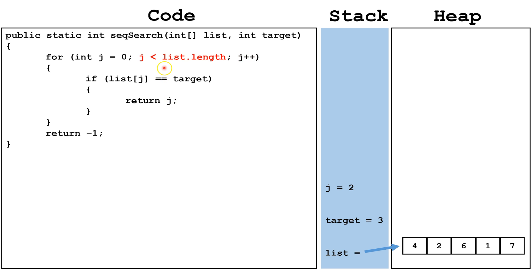Back up at the top of the for loop, we're checking: is j less than list length? 2 is less than 5, so the for loop will continue. Next, we're going to check list index j, where j is 2, so that value is 6. Does it equal our target, which is still 3? This is a false statement, so again we're going to skip this. We go back down to the end of the for loop and increment j by 1, so now j is 3.